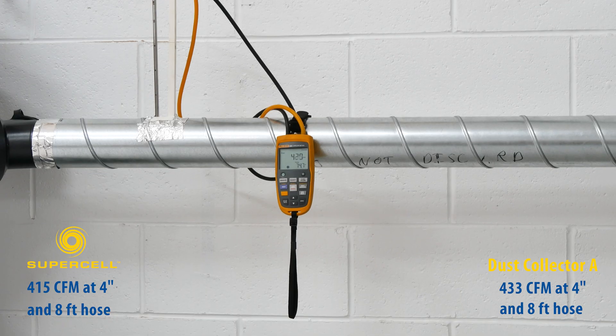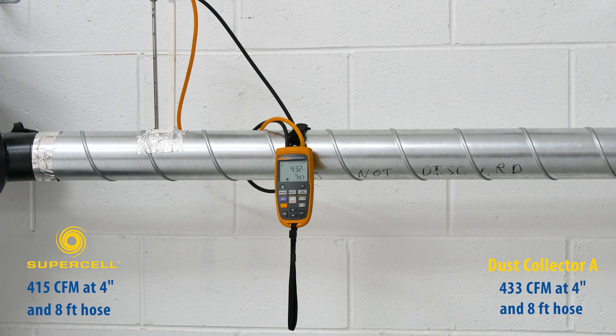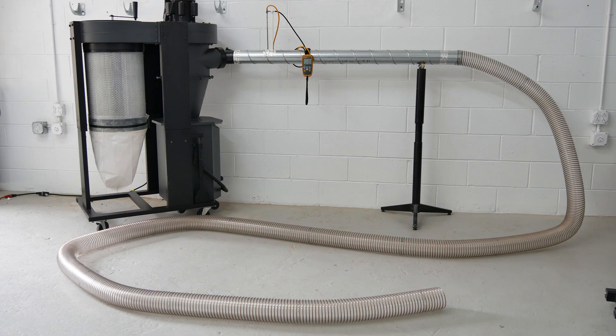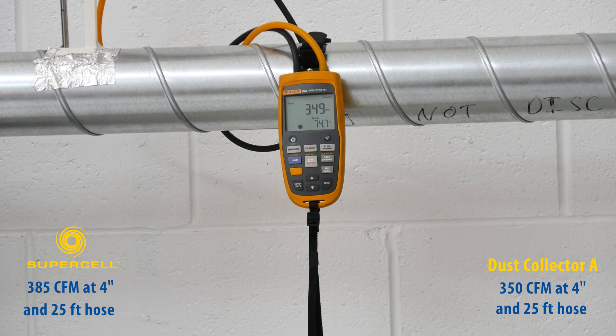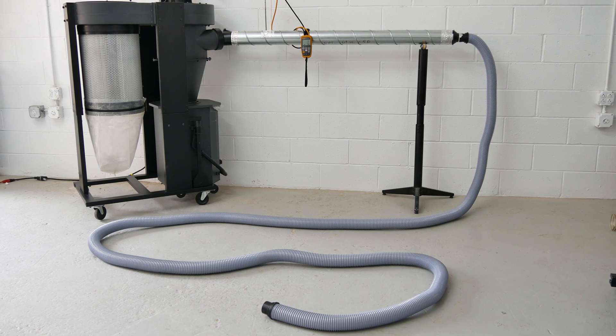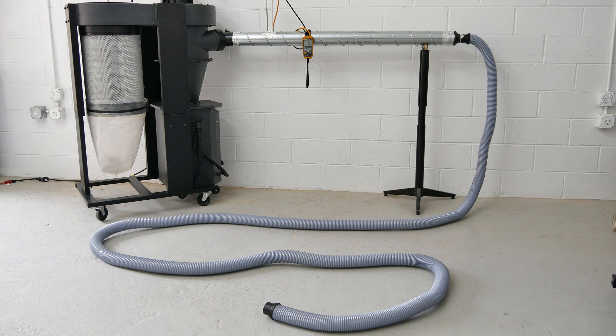In the setup with a 4-inch by 8-foot hose, Dust Collector A comes in at 433 CFM. With a 4-inch by 25-foot hose, this dust collector's airflow measures 350 CFM. And with 25 feet of 2.5-inch hose, this system pulls 149 CFM, less than half the airflow of the Supercell with the same setup.